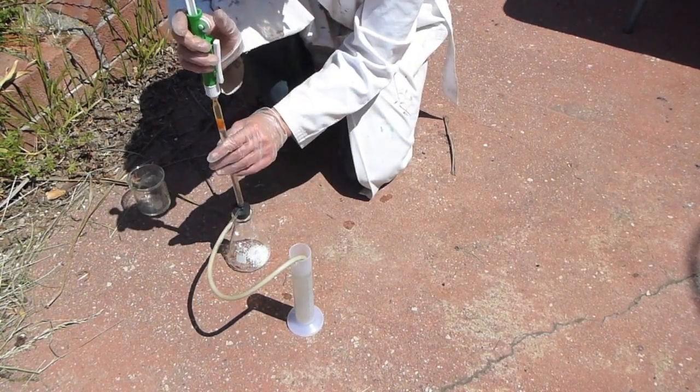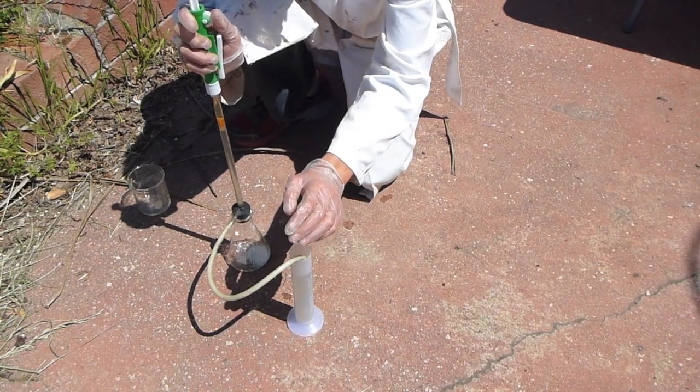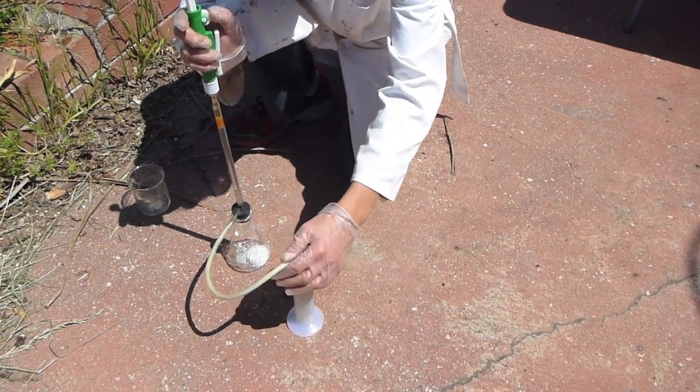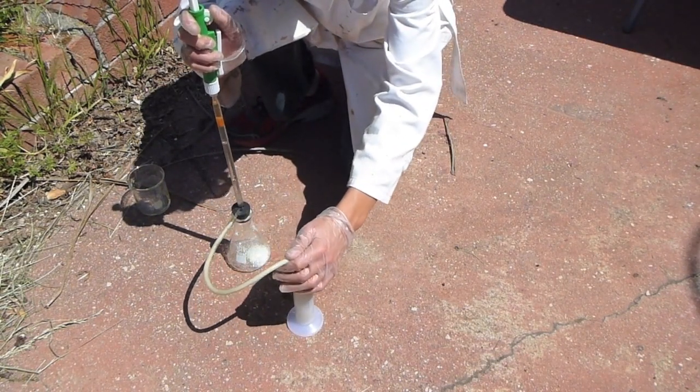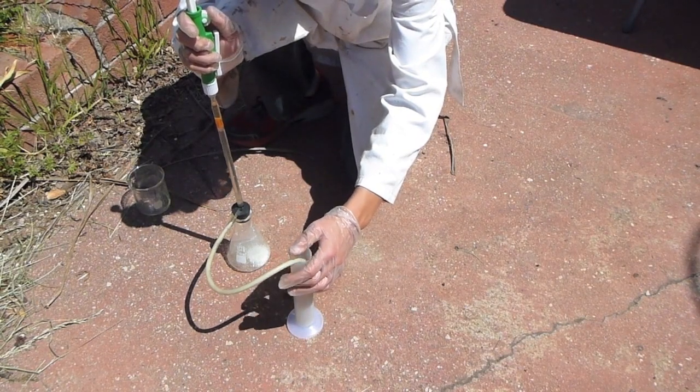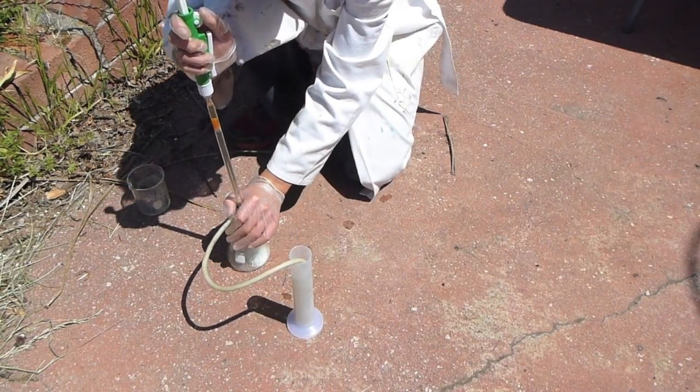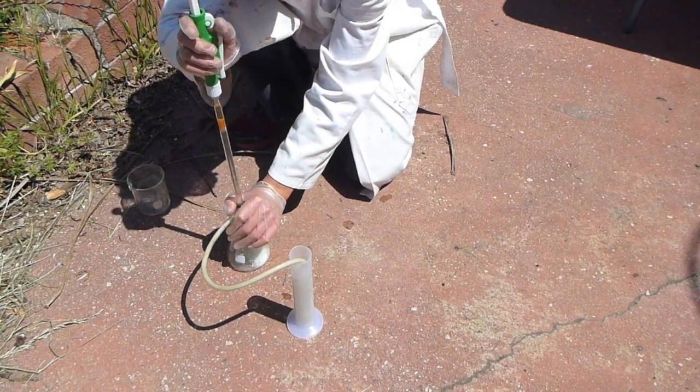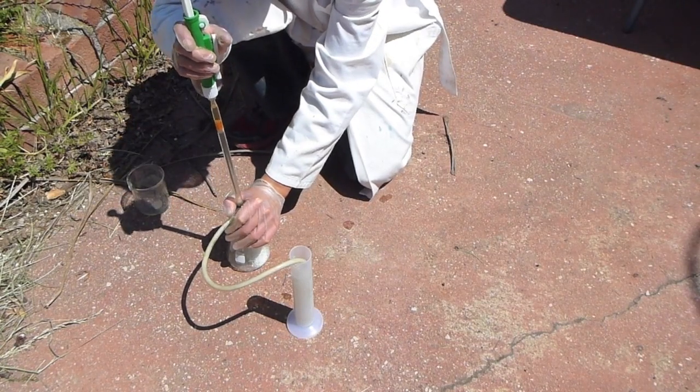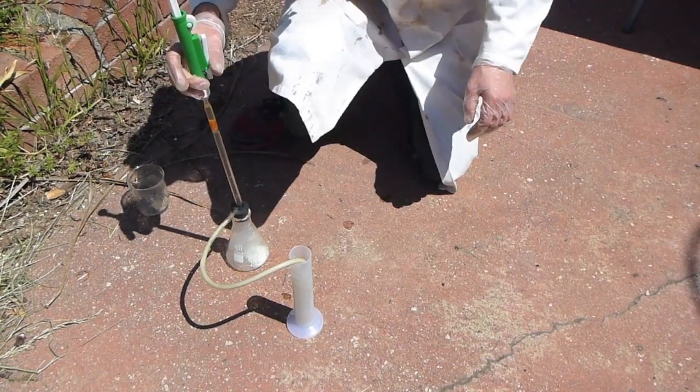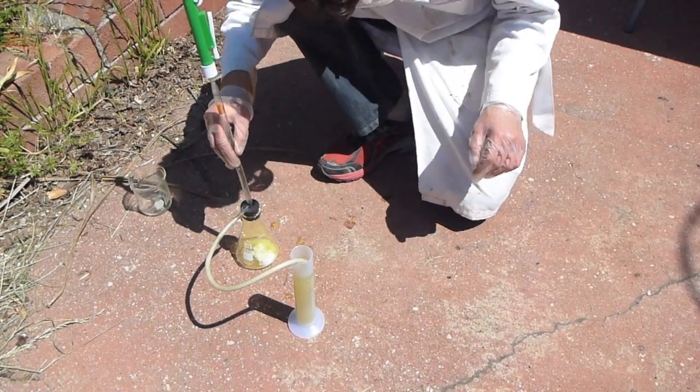And bubble the chlorine that's generated through the solution. Now the solution starts out a pretty light color, and it actually gets quite yellow, yellowish-orange after a while, and you can see now this solution is quite a bit more yellow.